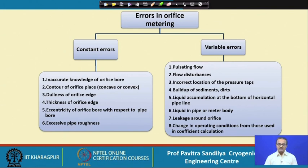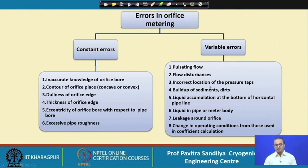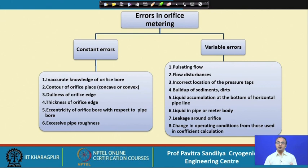There are many errors in measuring we should be aware of. Constant errors include inaccurate knowledge of the orifice bore, improper contour of the orifice (concave or convex), dullness of the orifice edge, its thickness, eccentricity of the orifice, and excessive pipe roughness. Variable errors include pulsating flow, flow disturbances, improperly located pressure taps, deposition of sediments and dirt over time, liquid accumulation due to condensation in horizontal pipes, liquid in the metering devices, leakage around the orifice, and changes in operating conditions from the base conditions used to derive the coefficient values.